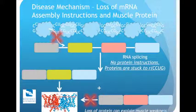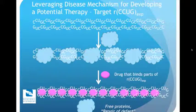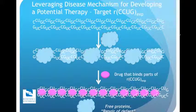How have people viewed this mechanism as a way to develop therapeutics? The RNA is bound to and sequestering protein instructions. If you want to make a therapeutic — a drug — you want to make something that binds to the RNA and frees this protein. If you can free that protein, it's no longer stuck to the DM2 RNA, and it can serve as instructions to piece together messenger RNAs to make fully functioning proteins.